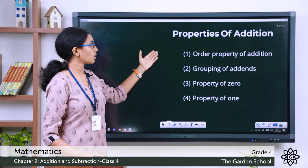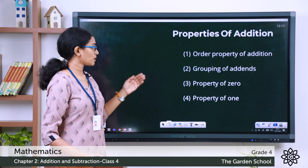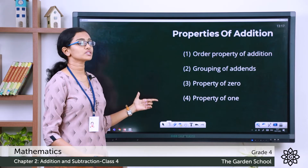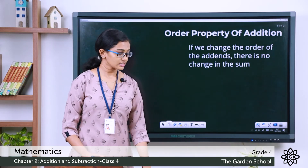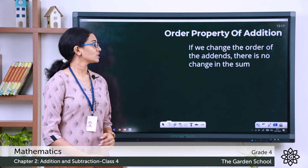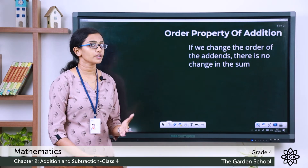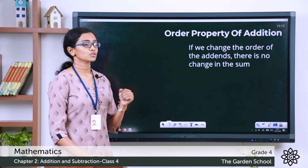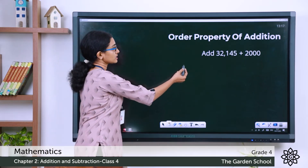In addition, we have the property of order or the order property of addition, the property of grouping of add-ins, the property of 0, and the property of 1. Let's see the order property of addition first. This property says that even if we change the order of the add-ins, the sum remains the same.